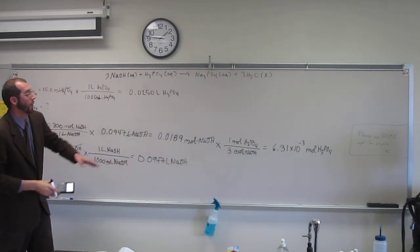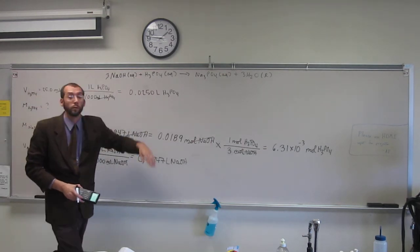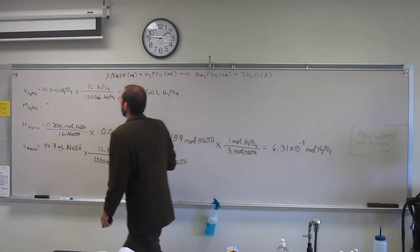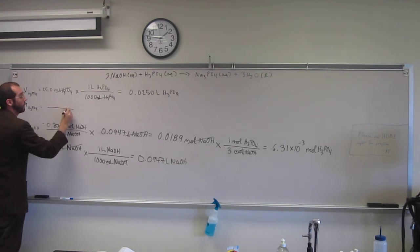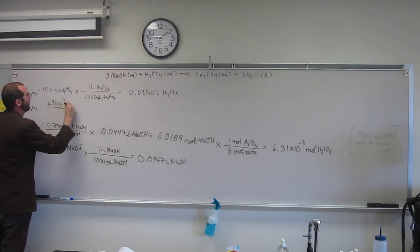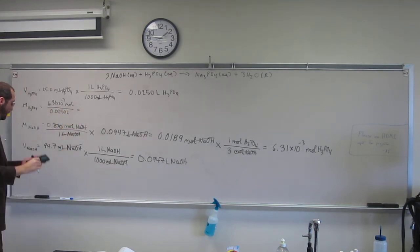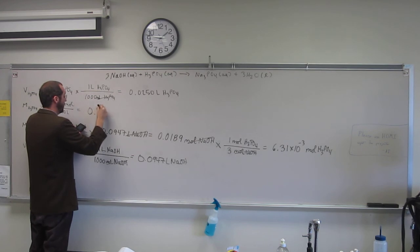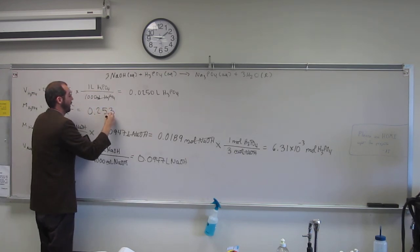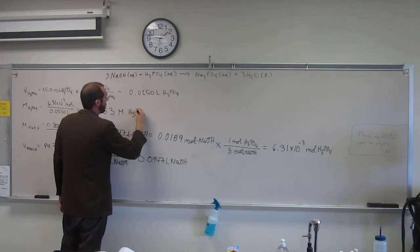So the number of, or the volume is the same too, right, as before, so how do we do the concentration? Well, it's the number of moles of phosphoric acid divided by the liters of phosphoric acid, so 6.31 times 10 to the negative third moles divided by 0.0250 liters. And I got 0.253 molar phosphoric acid.